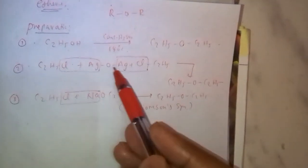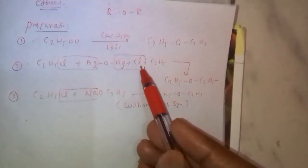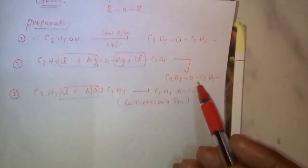When ethyl chloride reacts with dry silver oxide, by removal of 2 moles of AgCl, it forms diethyl ether.